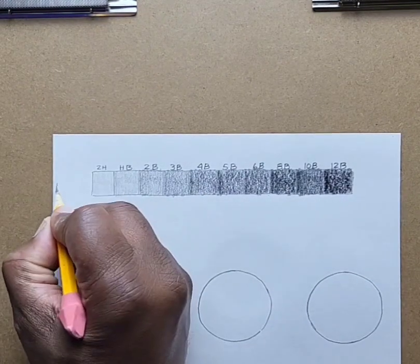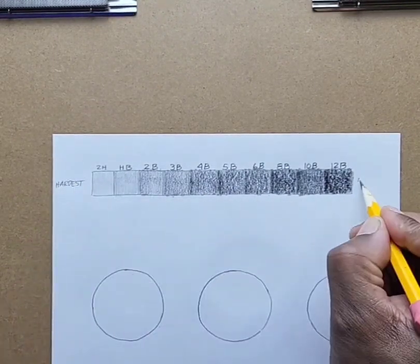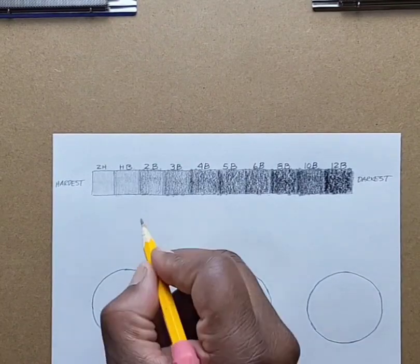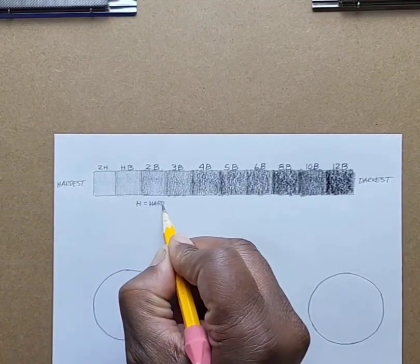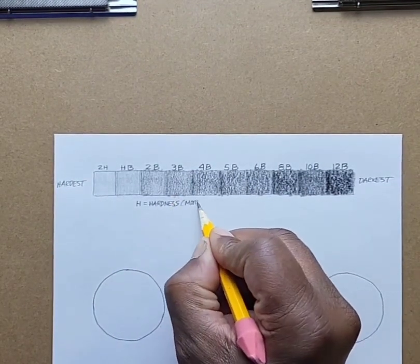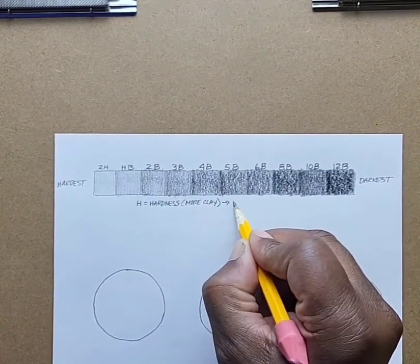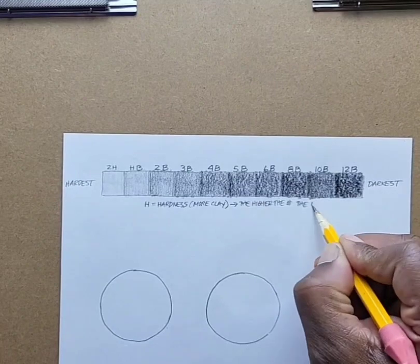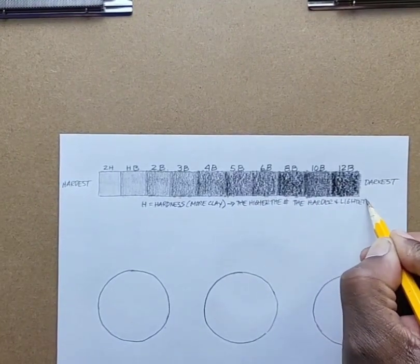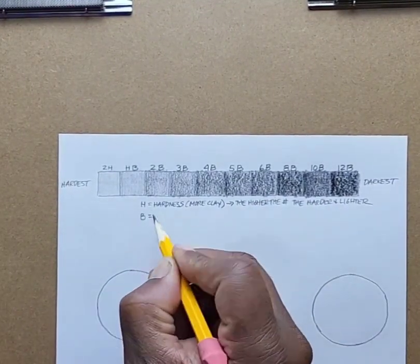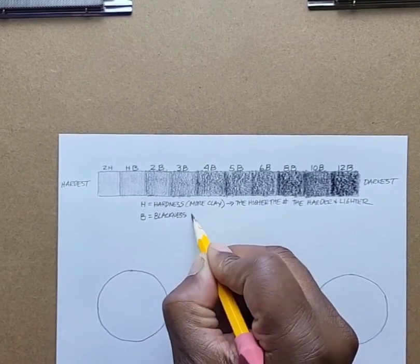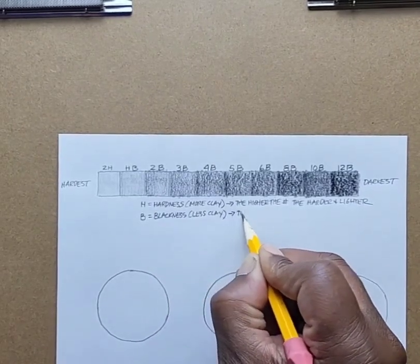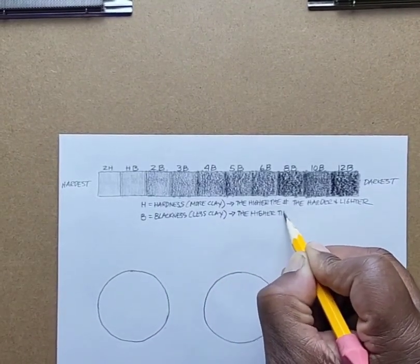Then you have the mid tones of colors which would be the HB through the 4B. H is for hard with a lot of clay; the higher the number, the harder and lighter the pencil. B equals blackness with less clay; the higher the number, the blacker and softer the pencil.